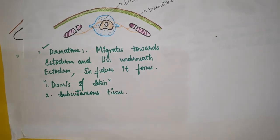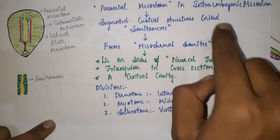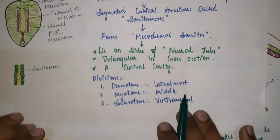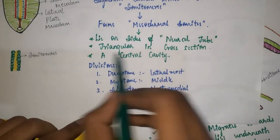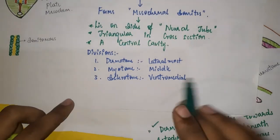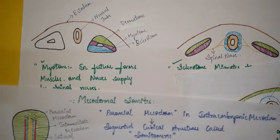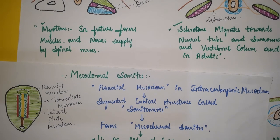So this completes the mesodermal somites. The paraxial mesoderm, initially a uniform area, forms somatomeres; somatomeres form mesodermal somites which are segments lying on either side of the neural tube in the intra-embryonic mesoderm. They are triangular in cross section with a central cavity. Subdivisions are dermatome, myotome, and sclerotome. In adults: dermatome becomes the dermis of skin and subcutaneous tissue; myotome becomes striated muscles; sclerotome becomes the vertebral column and ribs.